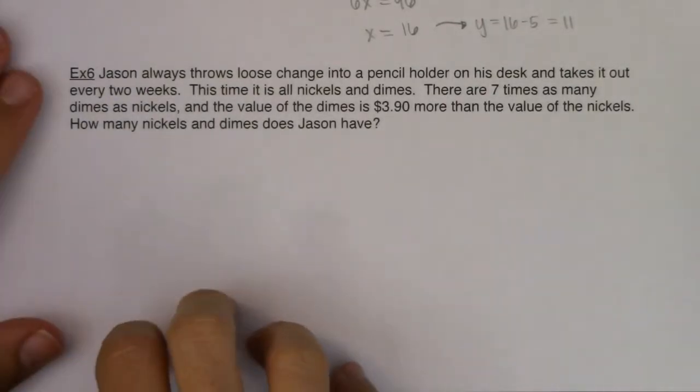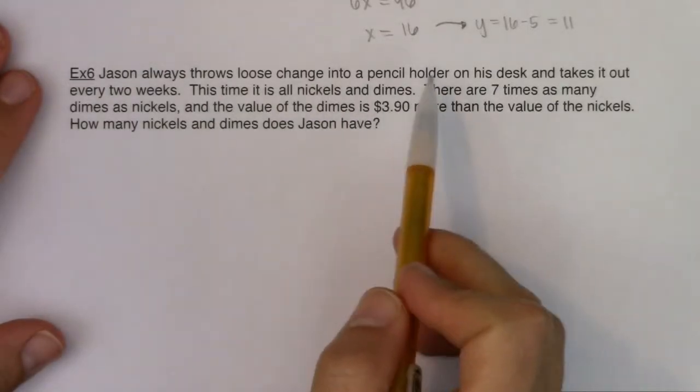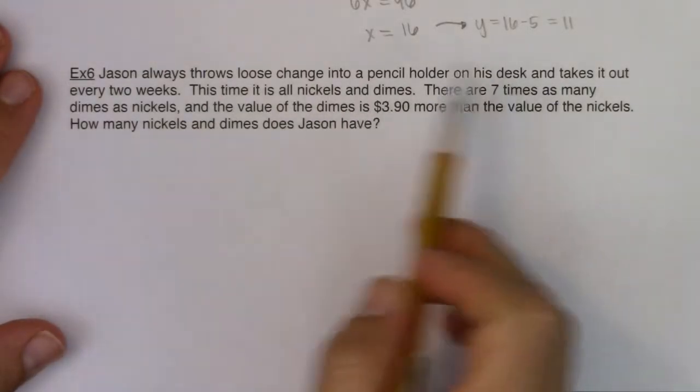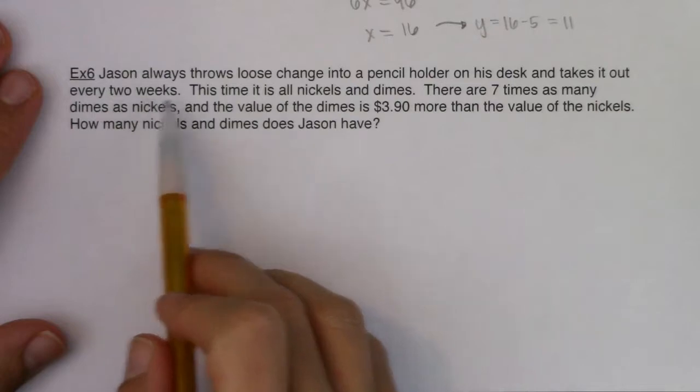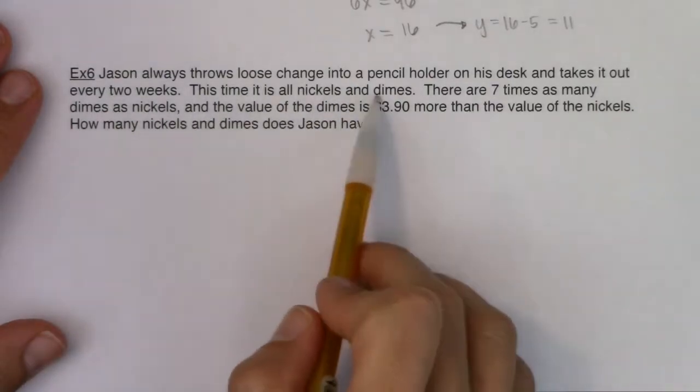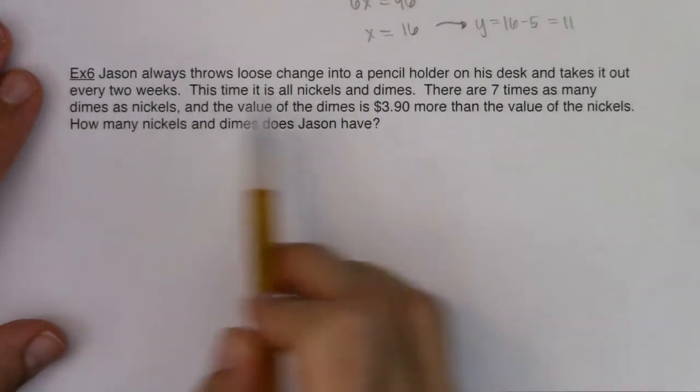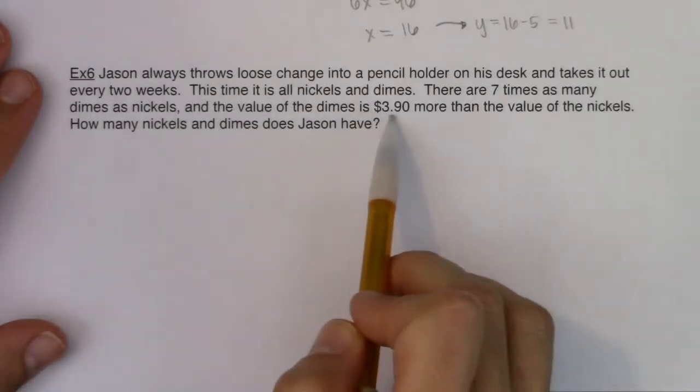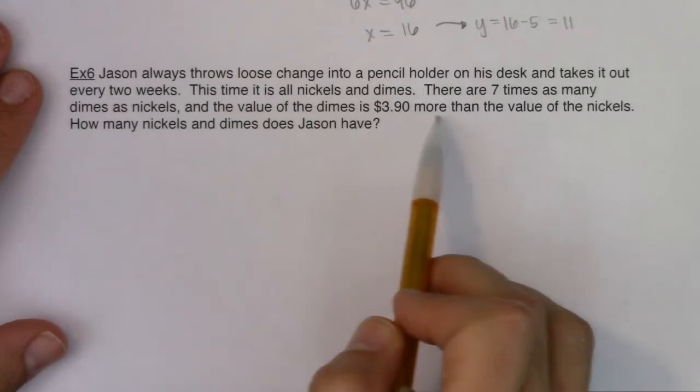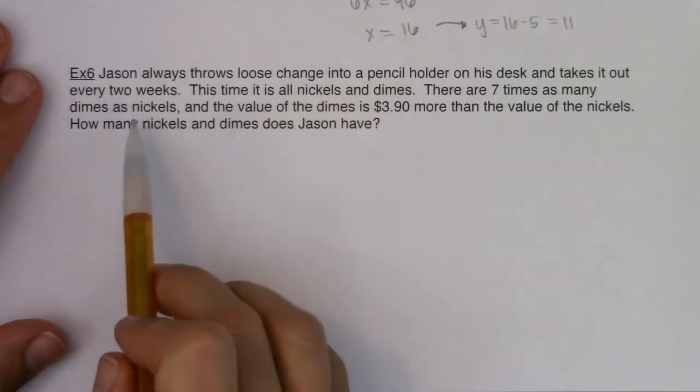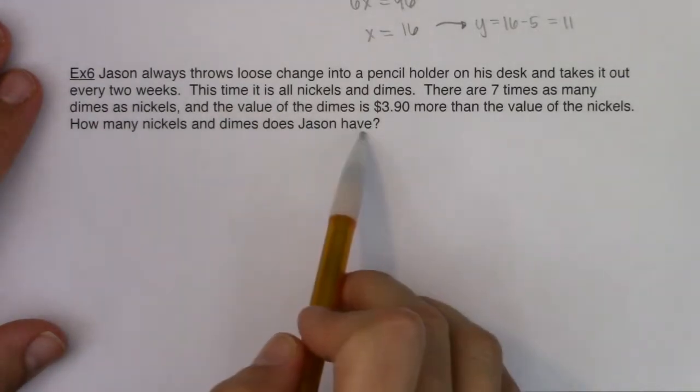Alright, so Jason always throws loose change into a pencil holder on his desk and takes it out every two weeks. This time it's all nickels and dimes. There are seven times as many dimes as nickels and the value of the dimes is $3.90 more than the value of the nickels. How many nickels and dimes does Jason have?